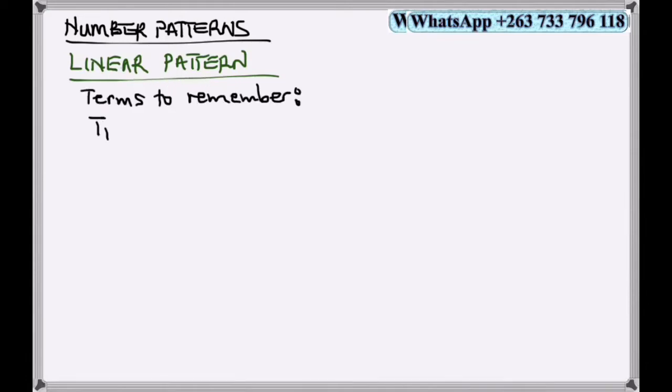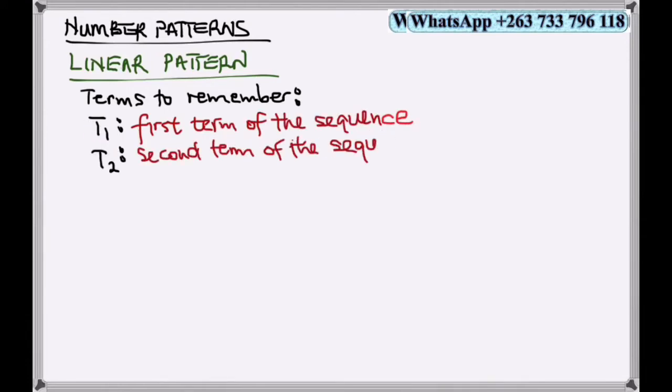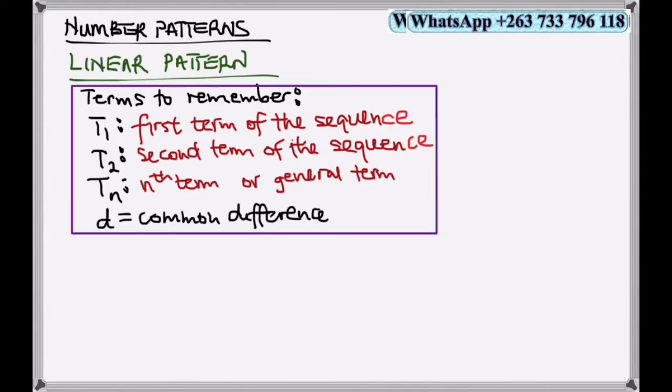On linear patterns, there are terms to remember. T1 is the first term of the sequence, T2 is the second term of the sequence, Tn is the nth term or general term of the sequence, and d is the common difference, which is the difference between two consecutive numbers in a sequence.